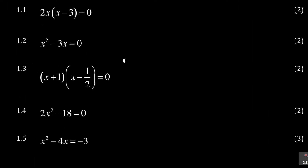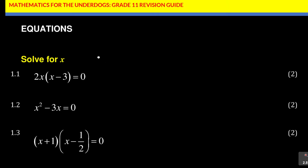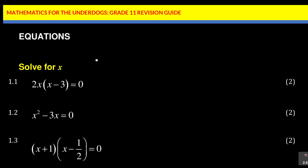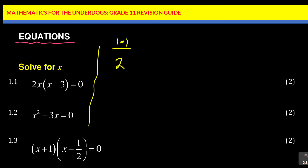Whenever you're talking about an equation, you solve for x. This is the starting point — the basics, mainly from your Grade 10, but a very important section. Now let's look at this and take our time. For question 1.1, you are given 2x and then (x minus 3).